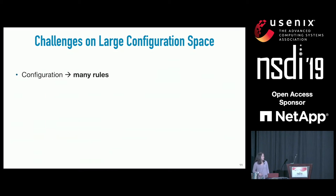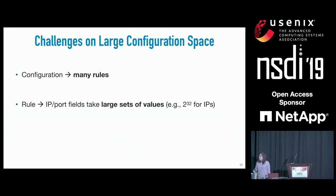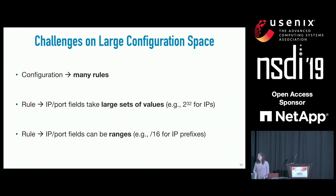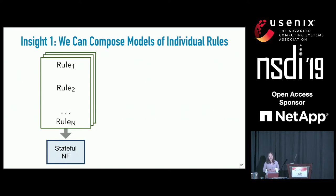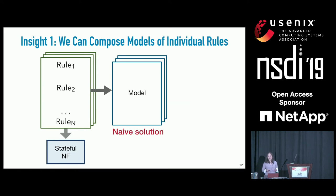Let's tackle the first challenge. There are three factors that lead to combinatorial explosion in configuration space. A configuration can take many rules; within a single rule, IP and port fields take large sets of values—like 32 bits for source IP—and they also take ranges like /16 for IP prefixes or wildcards for ports. A naive solution would enumerate a model for every possible configuration out of 2^n possibilities for n rules, which is clearly infeasible.